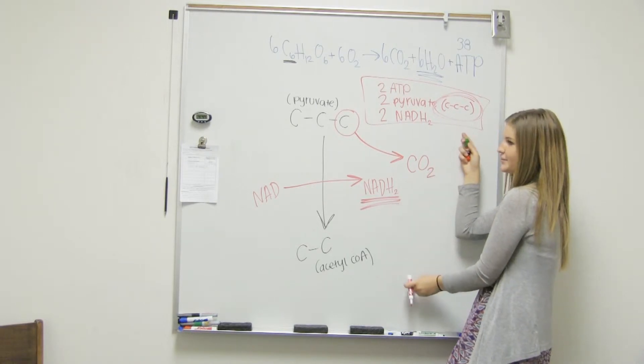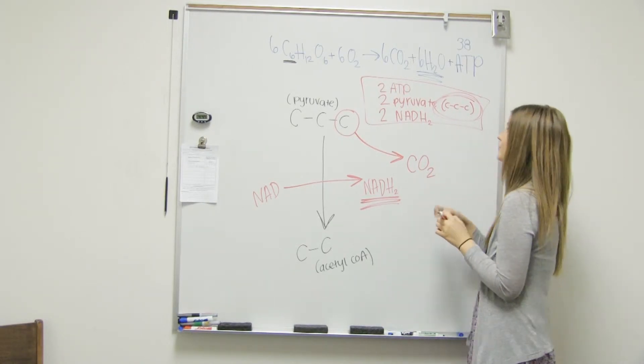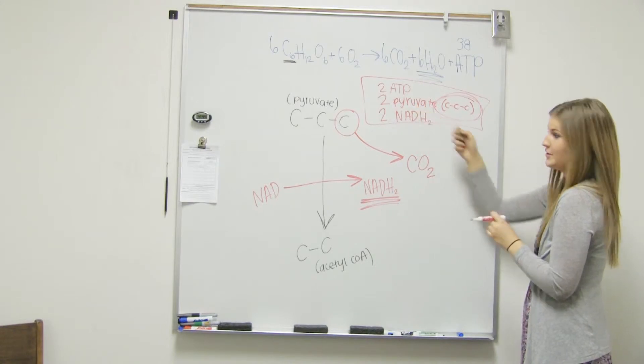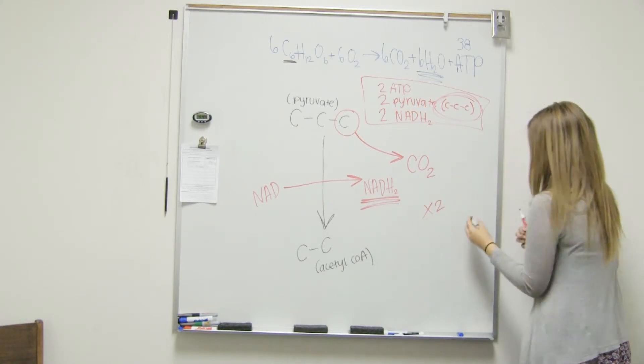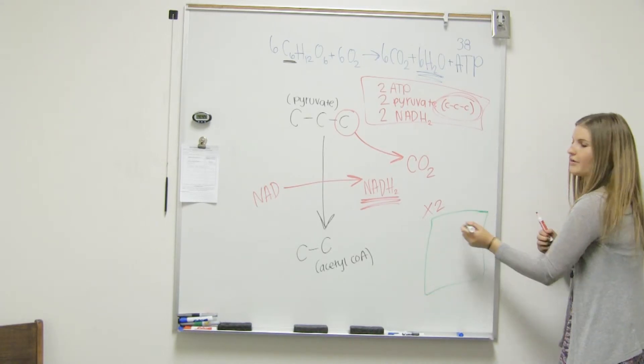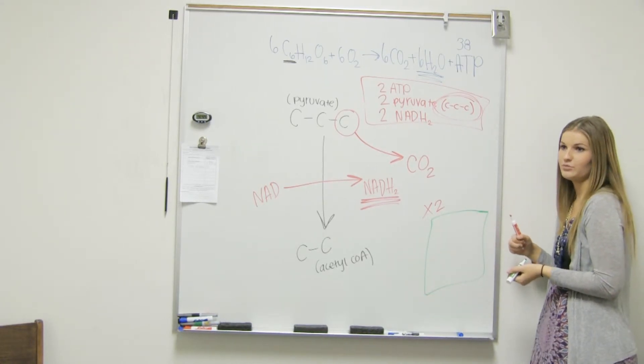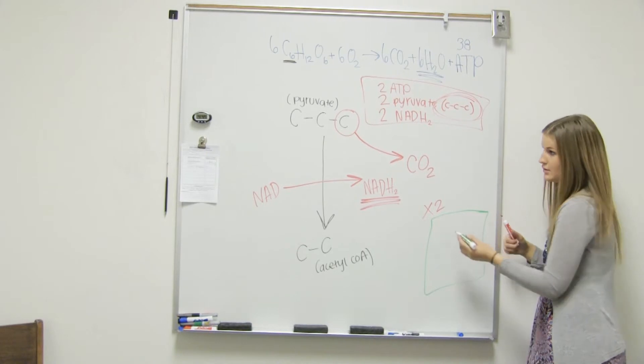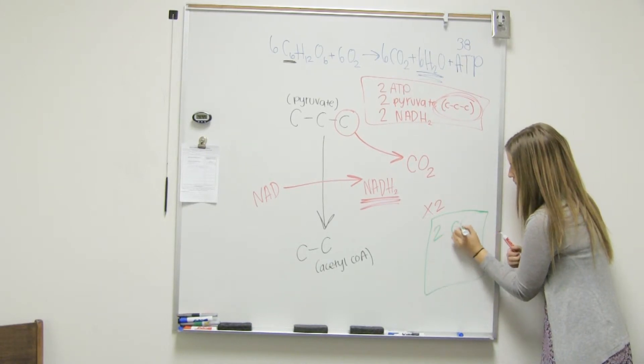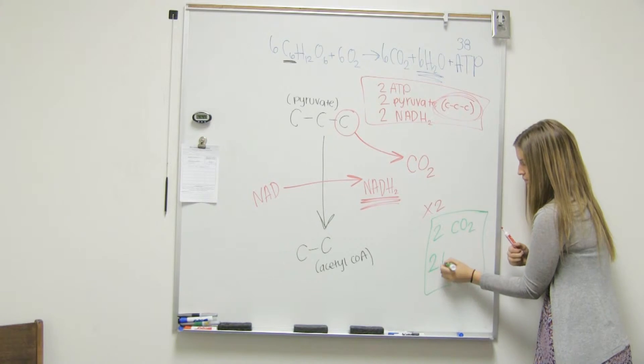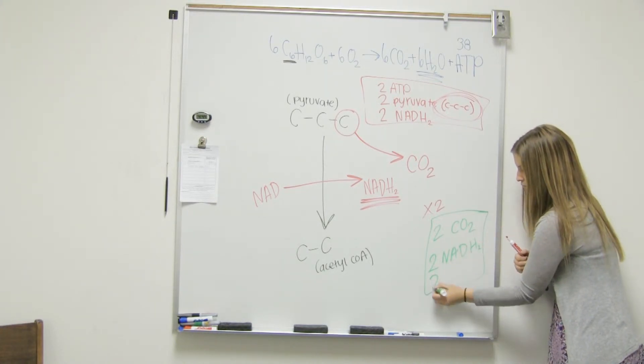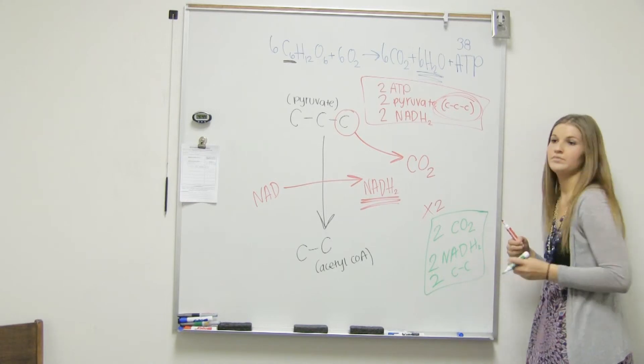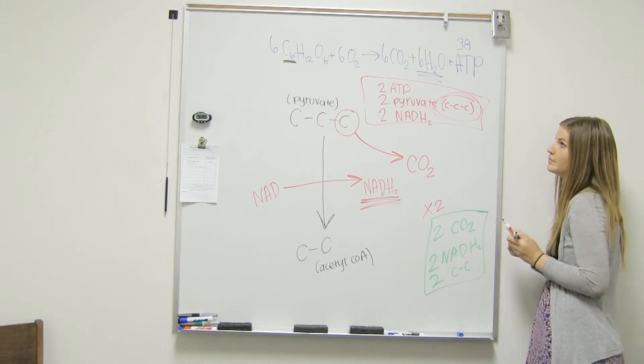So this is your entire acetyl-CoA formation. But we have two pyruvates, right? So we're going to time that all by two. So let's make another little thing. What do we get out of acetyl-CoA formation? What are our products? Two carbon dioxide. Perfect. And then two NADH. And then two acetyl-CoA. So do we get any ATP?